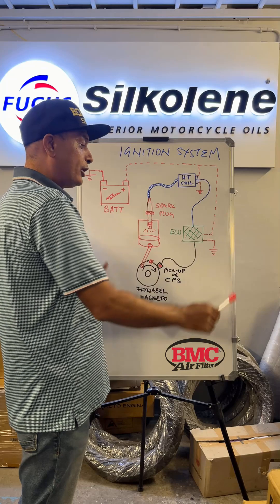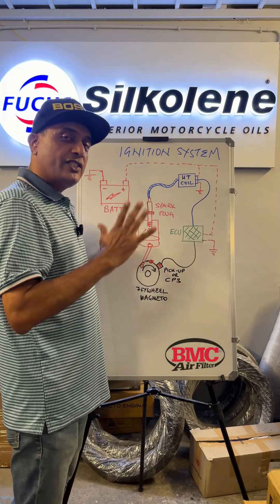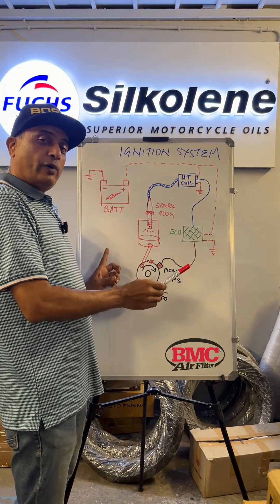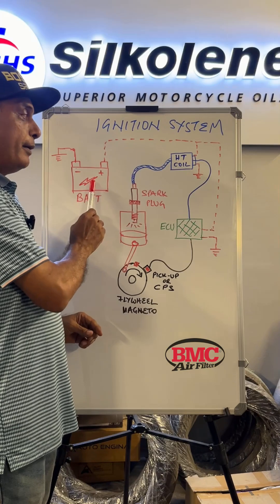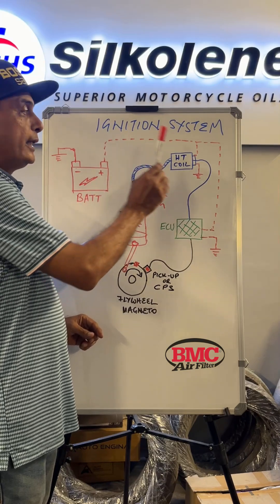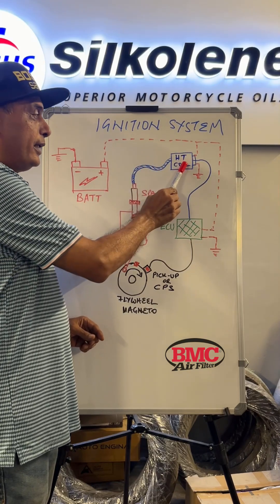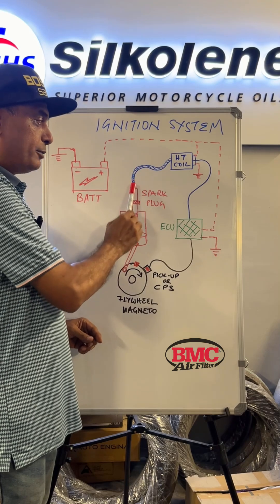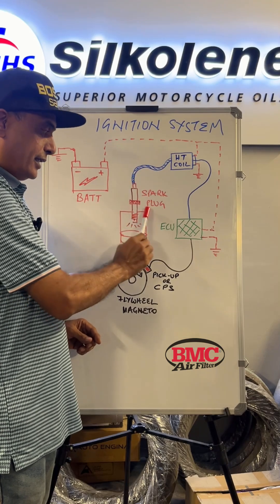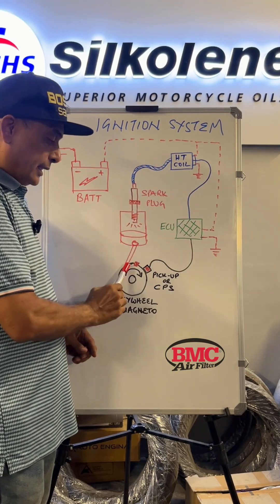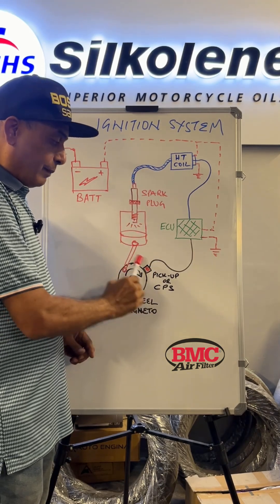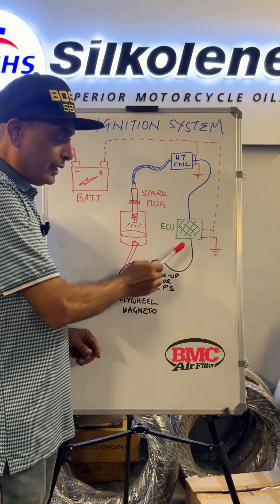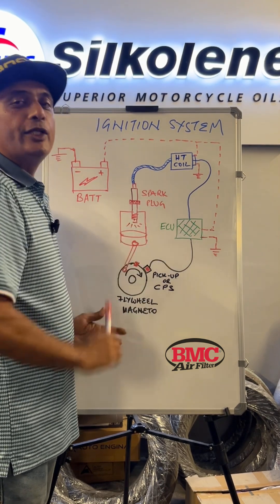This is a drawing of a generic ignition system. Various components are battery, the HD coil, the HD coil lead, the spark plug, this is the cylinder, piston, flywheel magneto, the pickup coil and the ECU.